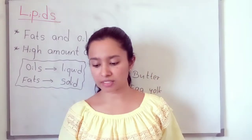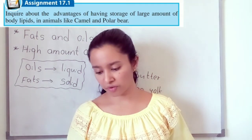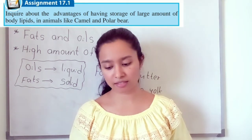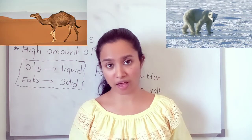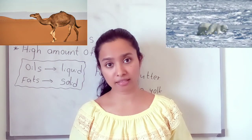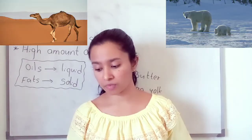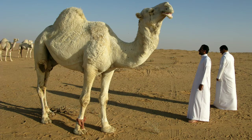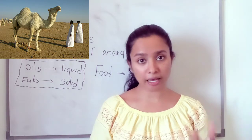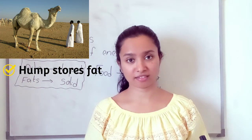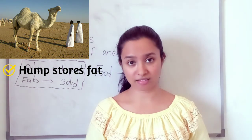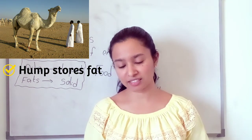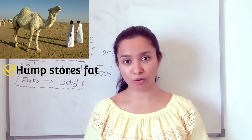Look at assignment 17.1: What is the advantage of having a large amount of stored body lipids in animals like camel and polar bear? For the camel, the hump stores fat. During periods when food is scarce, they can use this stored fat as nourishment.